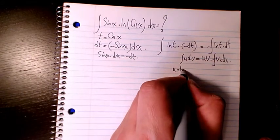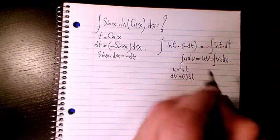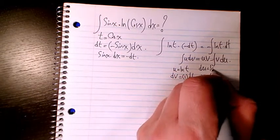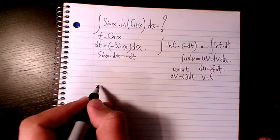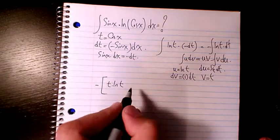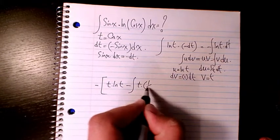u is ln(t), dv is 1 times dt, so v will be t, du will be 1 over t dt. Then it will be negative u times v, which is t ln(t), minus the integral of v du, t times 1 over t dt.